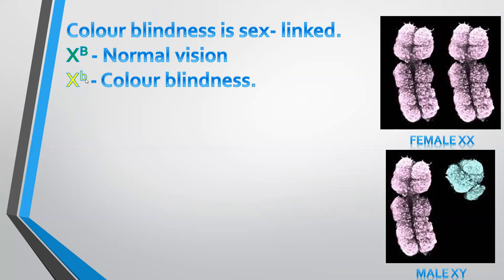A female inherits two X chromosomes, one from each parent, and therefore carries two alleles for color vision. Whereas a male carries an X chromosome and a Y chromosome in each of his cells. The Y chromosome inherited from his father is much smaller in size compared to the X chromosome, and therefore has much less DNA and less information.